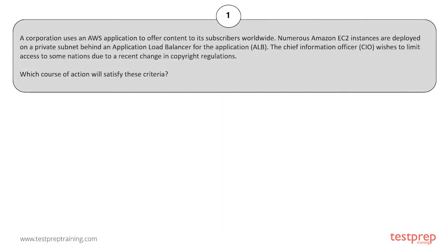Question number one: A corporation uses an AWS application to offer content to its subscribers worldwide. Numerous Amazon EC2 instances are deployed on a private subnet behind an Application Load Balancer. The Chief Information Officer wishes to limit access to some nations due to a recent change in copyright regulations. Which course of action will satisfy these criteria?